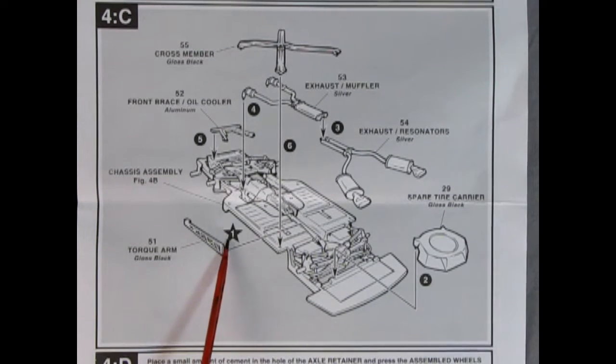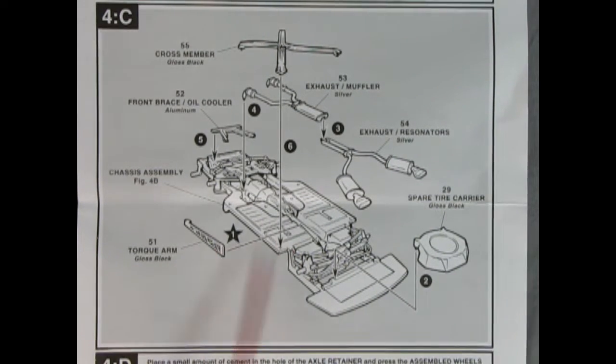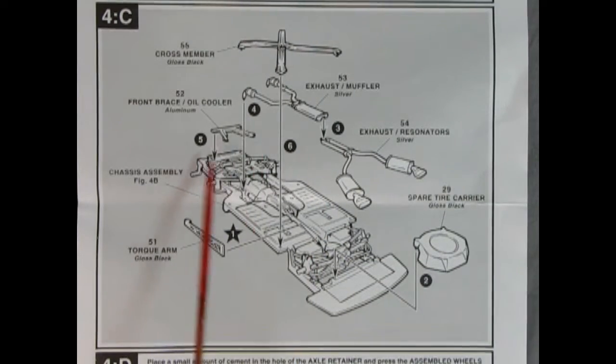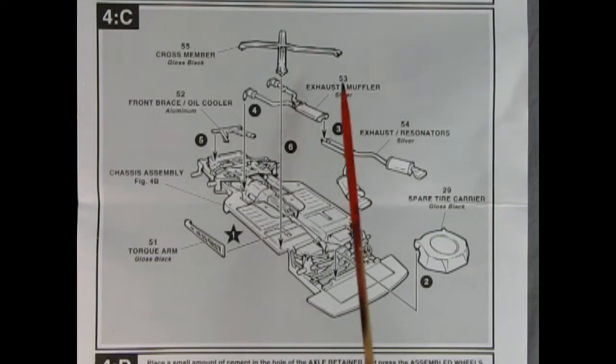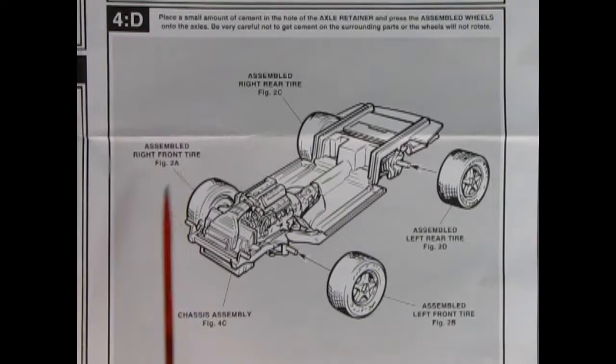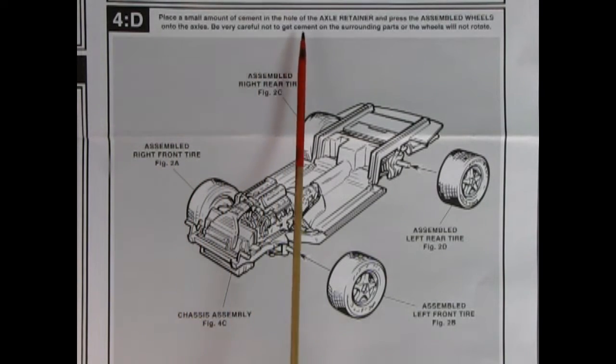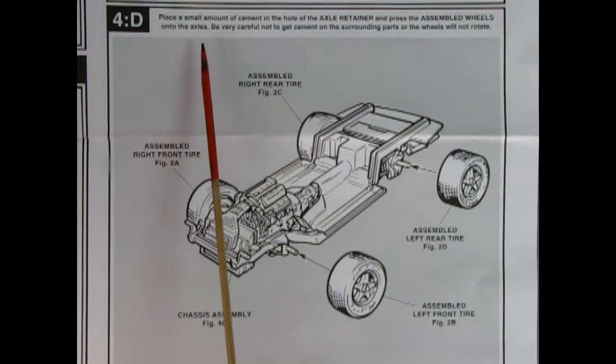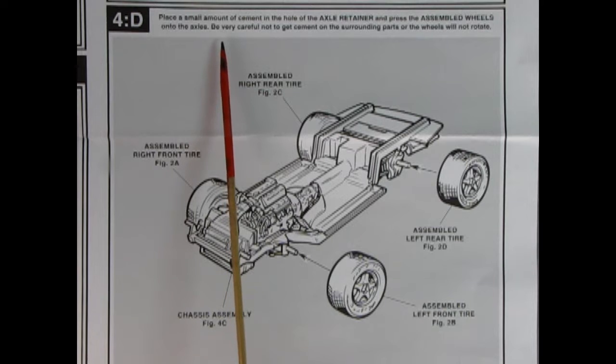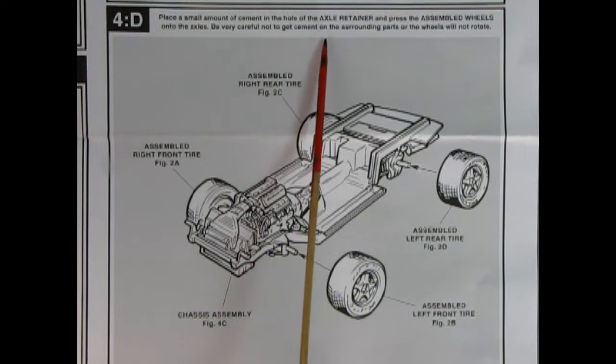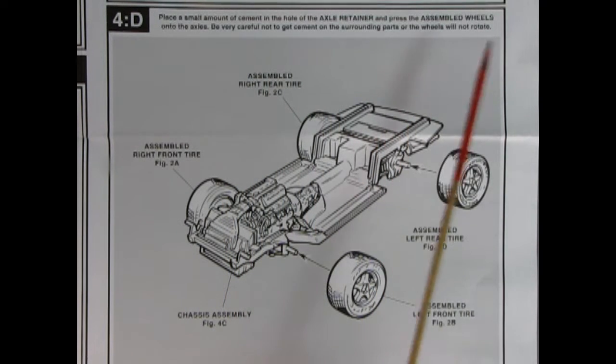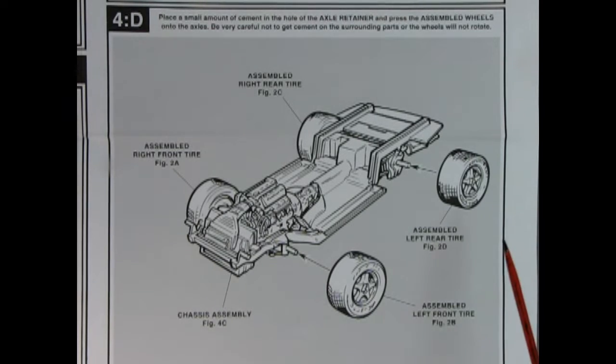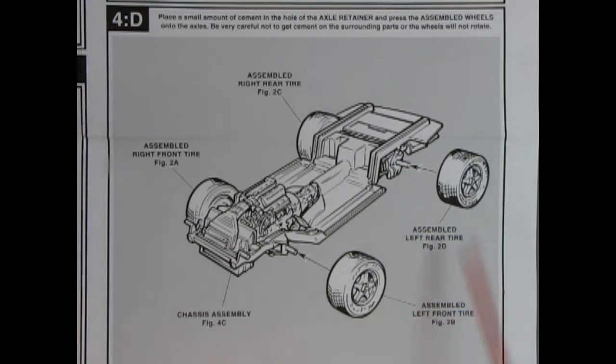Remember, the star is the first thing you put on. And then it goes two, three, four, five, six. And hey, there's no number for this cross brace. I want my money back. Now on panel 4D, it says place a small amount of cement in the hole of the axle retainer and press the assembled wheels onto the axles. Be very careful not to cement on the surrounding parts or the wheels will not rotate. And I fully agree. You want your wheels to spin on this so it'll roll right off the shelf.